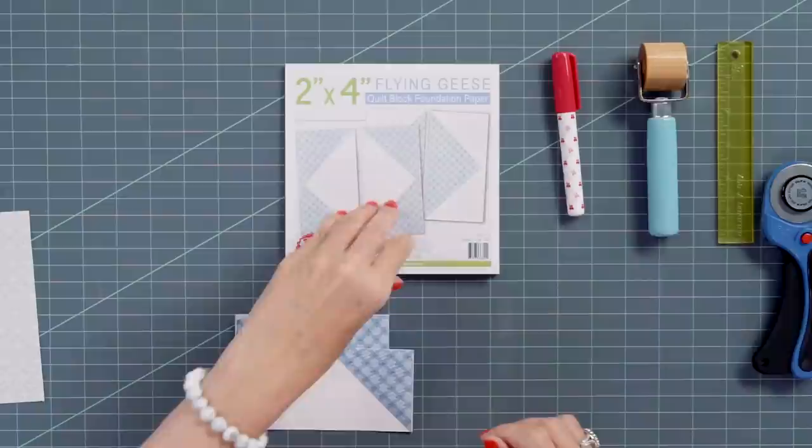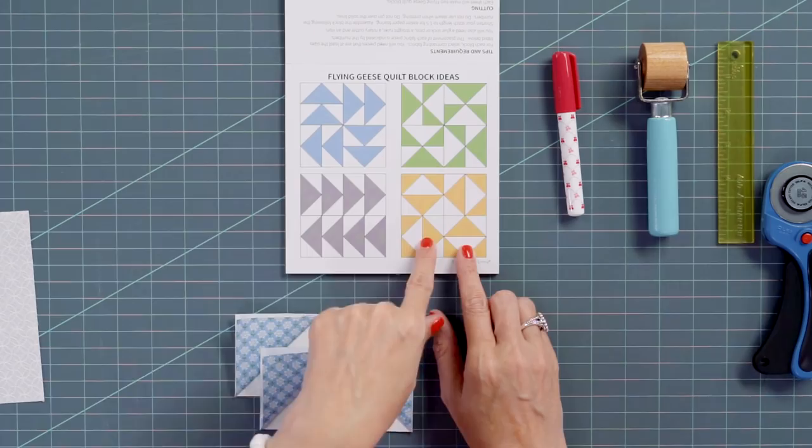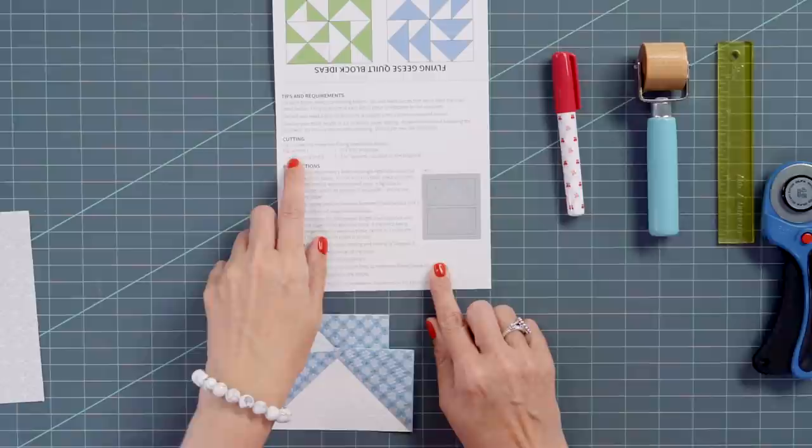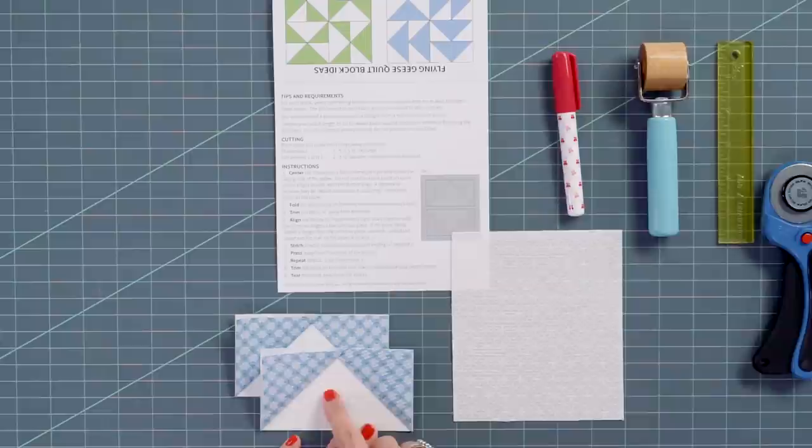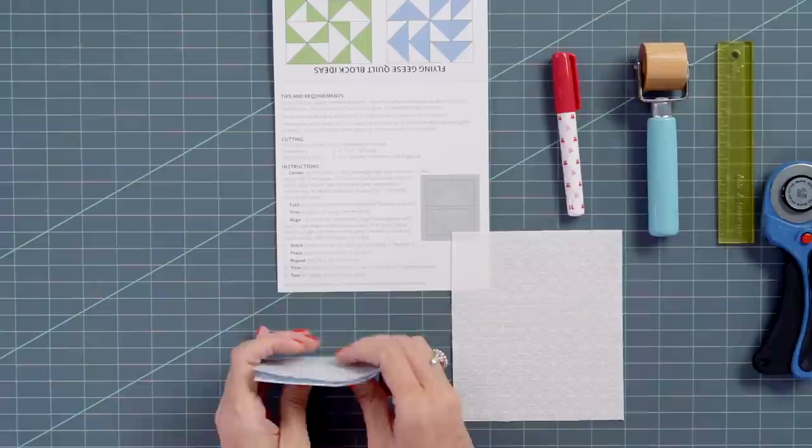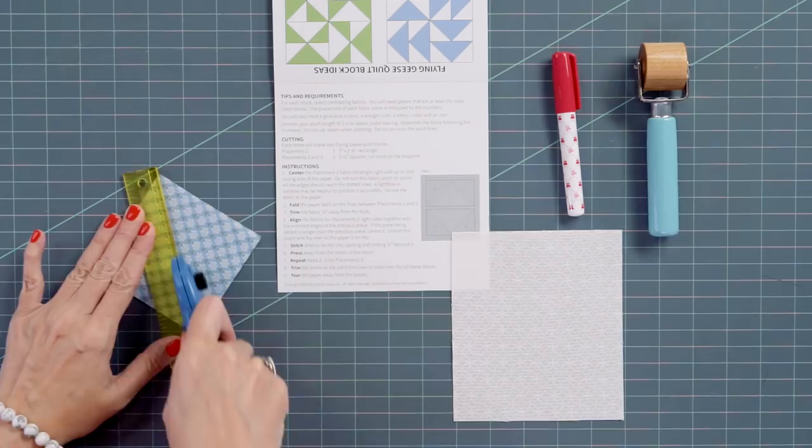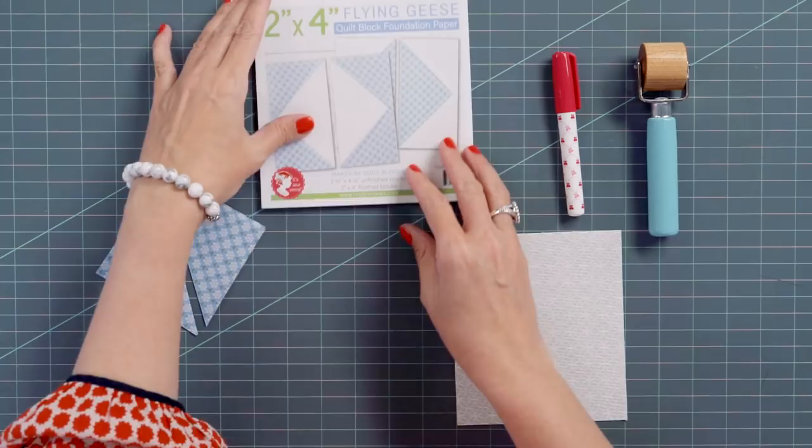When you open your flying geese pad of paper, right here you're going to have some fun block ideas. On the other side, it's going to tell you exactly what to cut. So for placement one, we need a five by five and three quarter inch rectangle, which we've already cut. That fabric will be this part of the flying geese. Then you're going to cut two three and a half inch squares and cut that on the diagonal to create four triangles. Today we're making the two by four inch finished, and again, we're going to make two flying geese out of this.